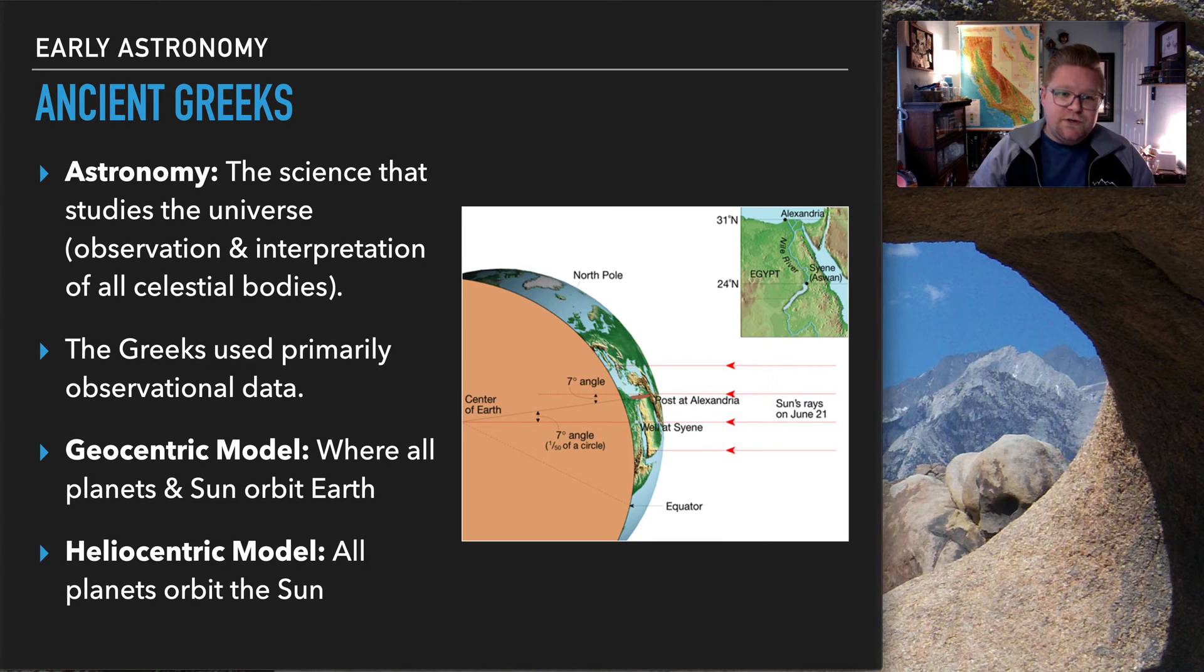So the Greeks used, obviously, observational data, and at that point then there was the idea of the geocentric model, meaning that the Earth is in the middle and everything must be around us. Now, is that the case? Well, no. Later we learned that we're actually a heliocentric model, in which the Sun is in the middle, although it's not quite in the middle, it's a little offset, and then everything kind of goes around it within our location.